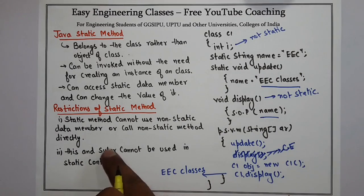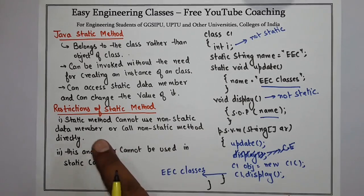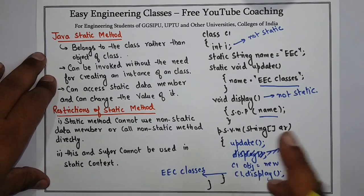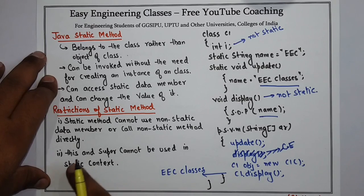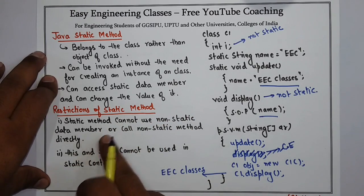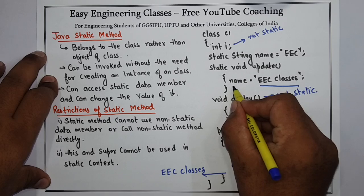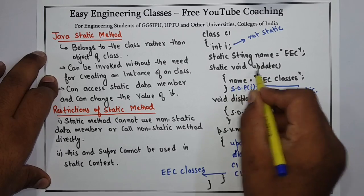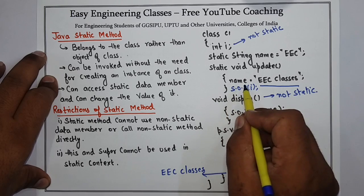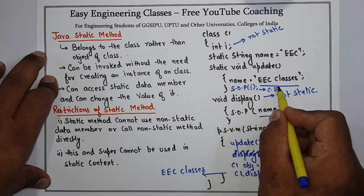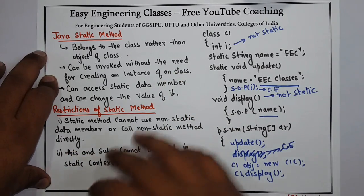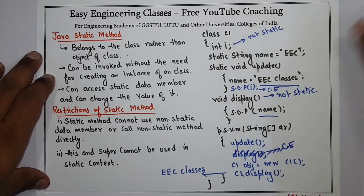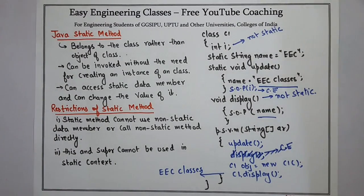There are certain restrictions on static methods. One: a static method cannot use non-static data members or call non-static methods directly. Since display is not static but main is static, I cannot call display directly — I have to create an object of the class. Also, a static method cannot use non-static data members directly; if I try to write System.out.println i inside the update method, since i is not static, it will give a compile-time error. The second restriction is: you cannot use this and super in a static context. That is all about static method — how to use it and its restrictions.